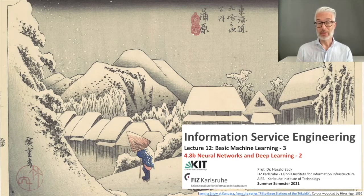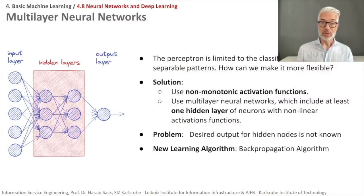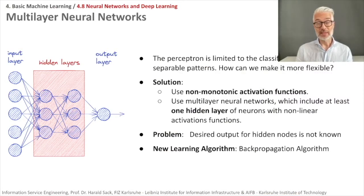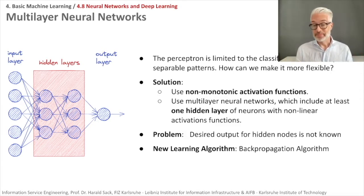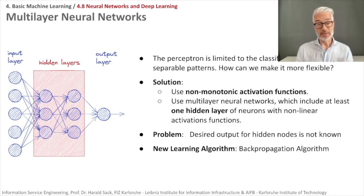We can overcome this limitation by using non-monotonic activation functions. So instead of the simple sign function, we could use a non-linear activation function, and we could use multiple layers — so instead of just one layer, you have some layers in between the output and the input layer which cannot be seen from the outside, which means they are so-called hidden layers. If all activation functions in the hidden layer were linear, we could simply substitute this multi-layer neural network with a single-layer perceptron — we don't want that.